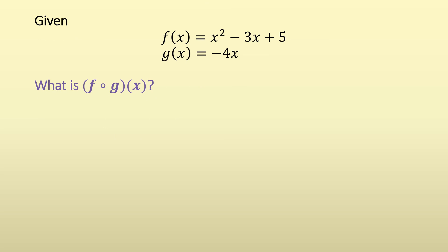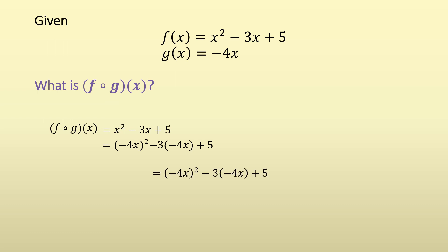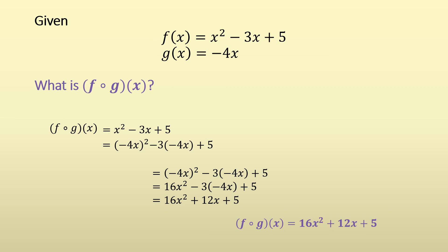Let's have the last one: composition. Given f(x) = x² − 3x + 5 and g(x) = −4x, find f∘g(x), or f(g(x)). We write out f, which is x² − 3x + 5, then substitute g(x) = −4x into every x in f. So we get (−4x)² − 3(−4x) + 5. The square of −4x is 16x², and −3 times −4x is +12x. So f(g(x)) = 16x² + 12x + 5.